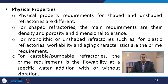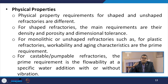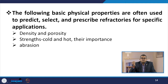For shaped refractories, the main requirements are density, porosity, and dimensional tolerance. For monolithic or unshaped refractories such as plastic refractories, workability and aging characteristics are the prime requirement. For castable or pumpable refractories, the prime requirement is flowability at a specific water ratio with or without vibration. The basic physical properties often used to predict, select, and prescribe refractories for specific applications are density, porosity, cold and hot strength, and abrasion resistance.